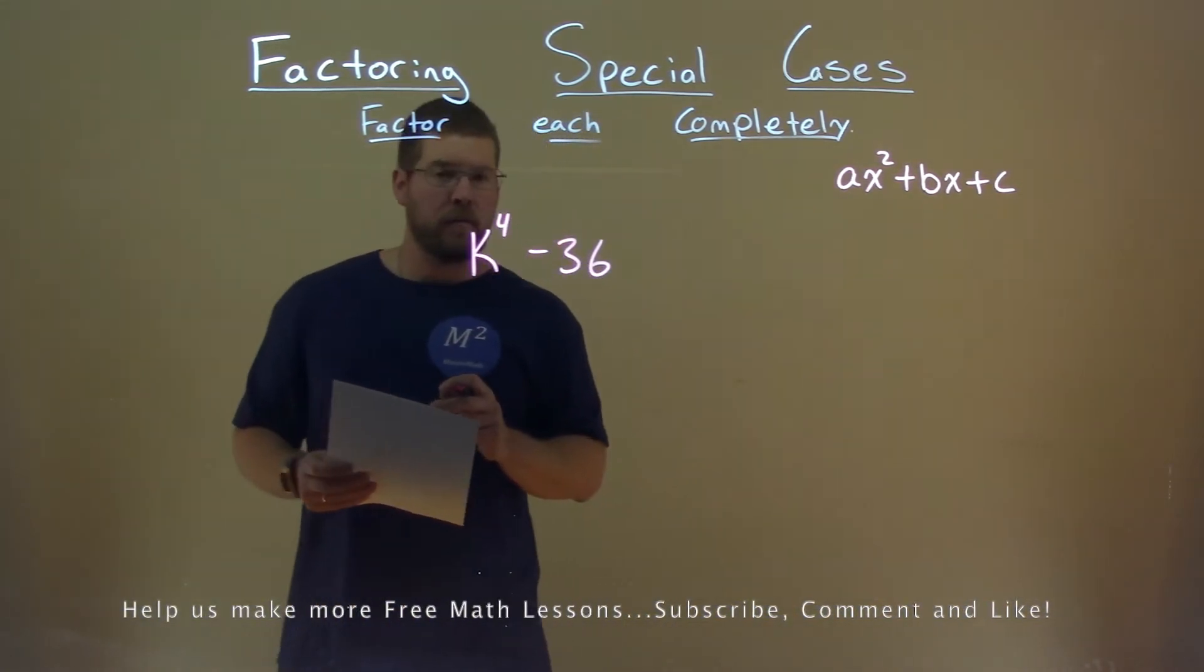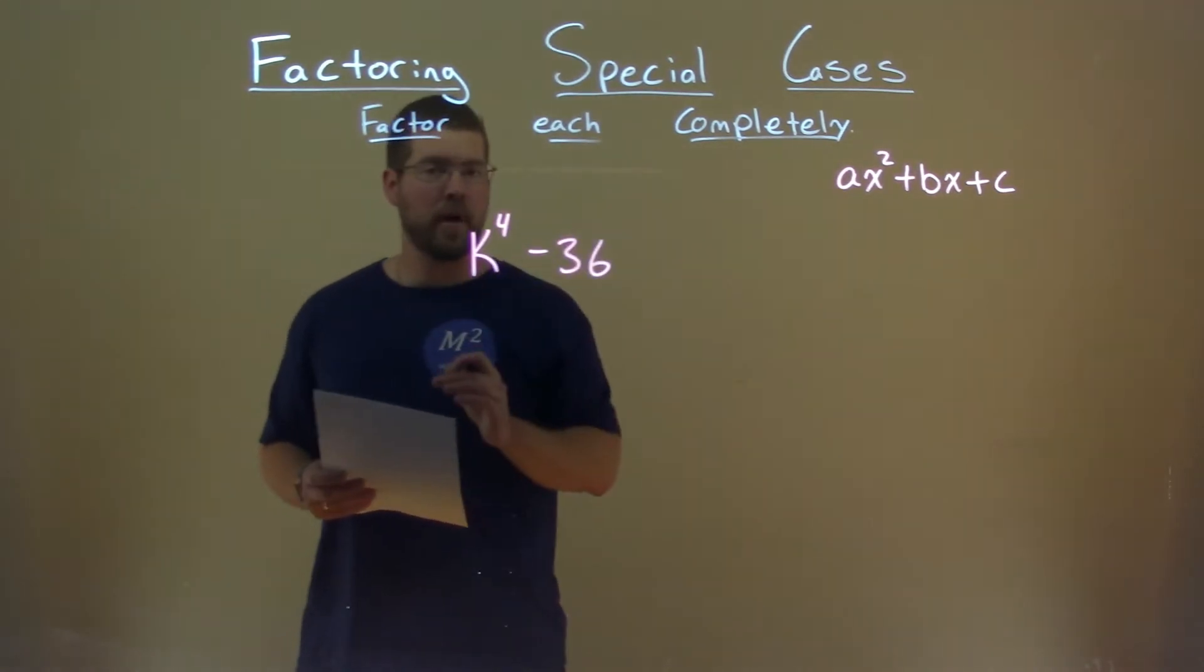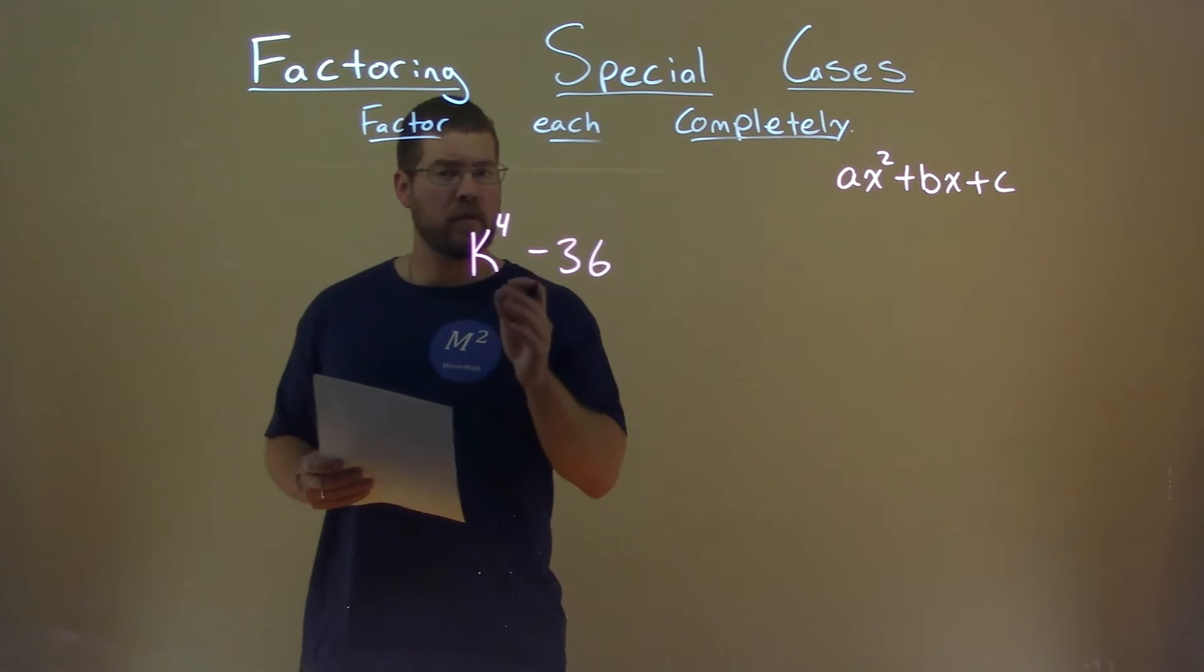Our coefficient in front of the k to the fourth is 1, making k to the fourth also a perfect square.